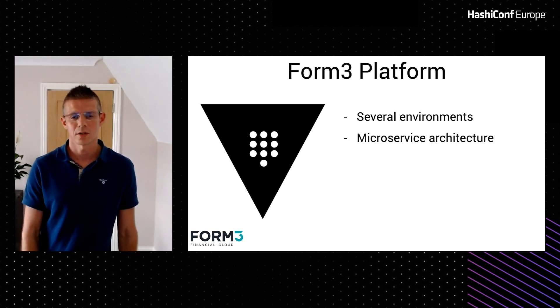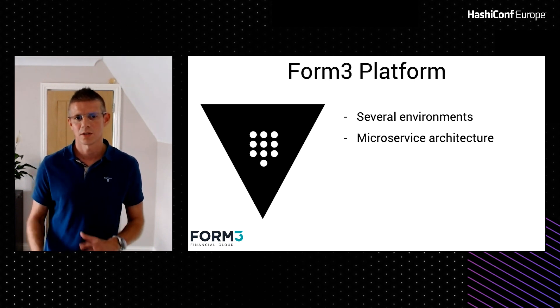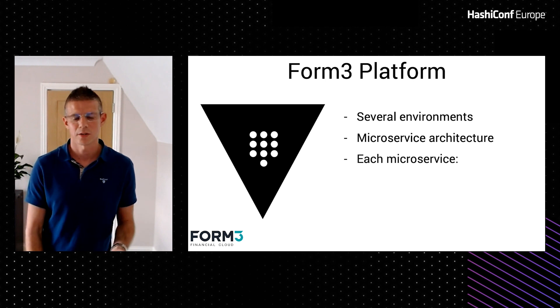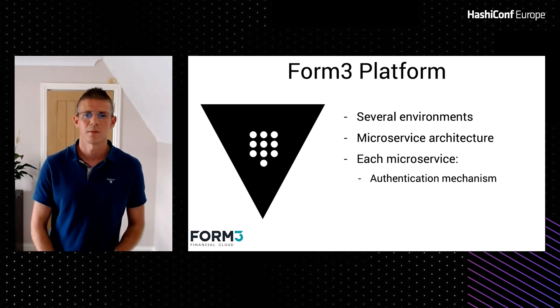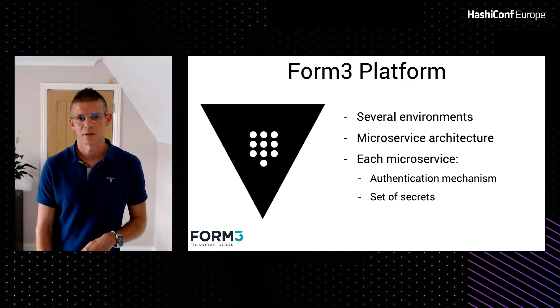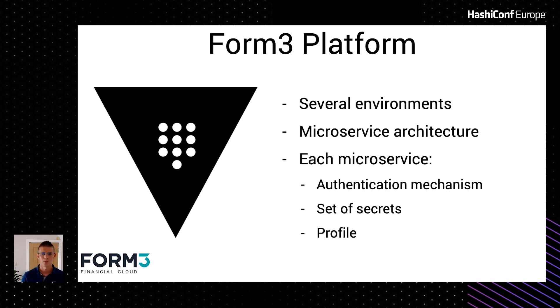We have a microservice architecture at Form3, so each of those microservices has different needs for Vault. We use Vault for secret storage — access to resources such as third-party APIs that need a secure token, or to get database credentials. Each microservice needs an authentication mechanism to authenticate with Vault and get access to its set of secrets. Some microservices also need the ability to write back to Vault. It's definitely not a one-size-fits-all problem.